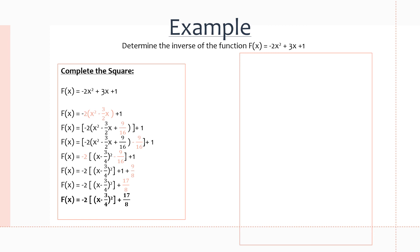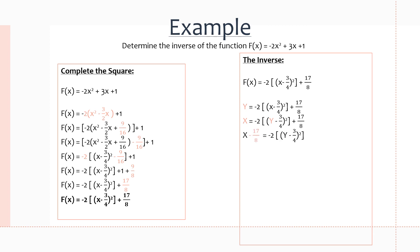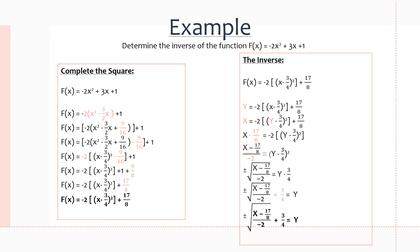Now with that, we can determine the inverse of the function. Here is the function in vertex form, which is what we'll be working with. The first step is to replace f(x) with y, then switch the x and y variables. Now we do algebra to isolate for y: x − 17/8 = −2(y − 3/4)². Divide both sides by −2, then square root both sides to get ±√((x − 17/8)/(−2)) = y − 3/4. Adding 3/4 to both sides gives us y = ±√((x − 17/8)/(−2)) + 3/4. That is the inverse of the function.